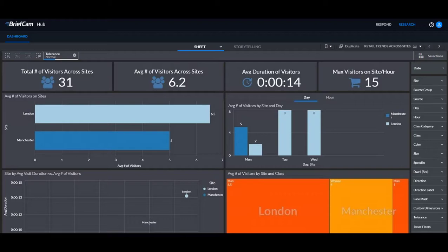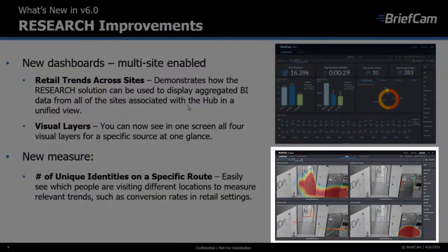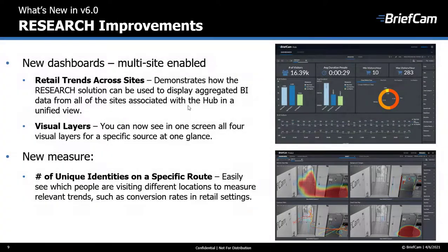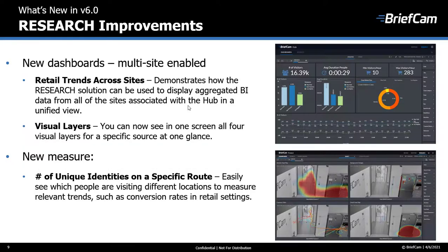You can have dozens of sites and see them all at one glance. We also released the visual layers dashboard, which displays all four available layers, letting you see at a glance important analytics about a specific source. Additionally, we added a new measure called 'number of unique identities on a specific route,' allowing you to easily see which people are visiting different locations to measure relevant trends. Detailed documentation is available.